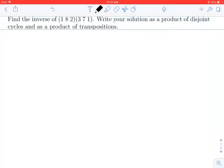Hi everybody. In this video, we're going to show how to find the inverse of a product of two permutations. So before handling this explicit permutation, 1-8-2 followed by 3-7-1, we're going to do this a little more abstractly.